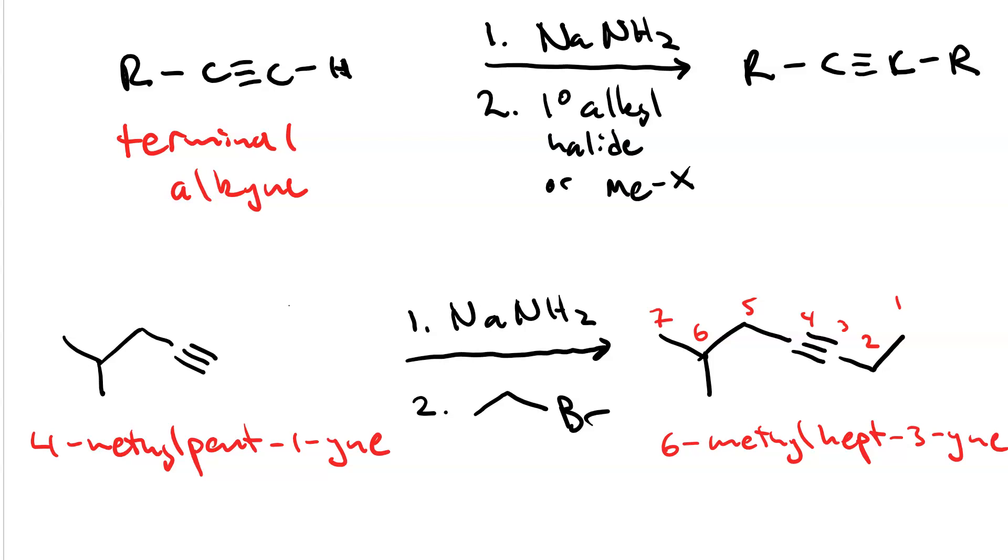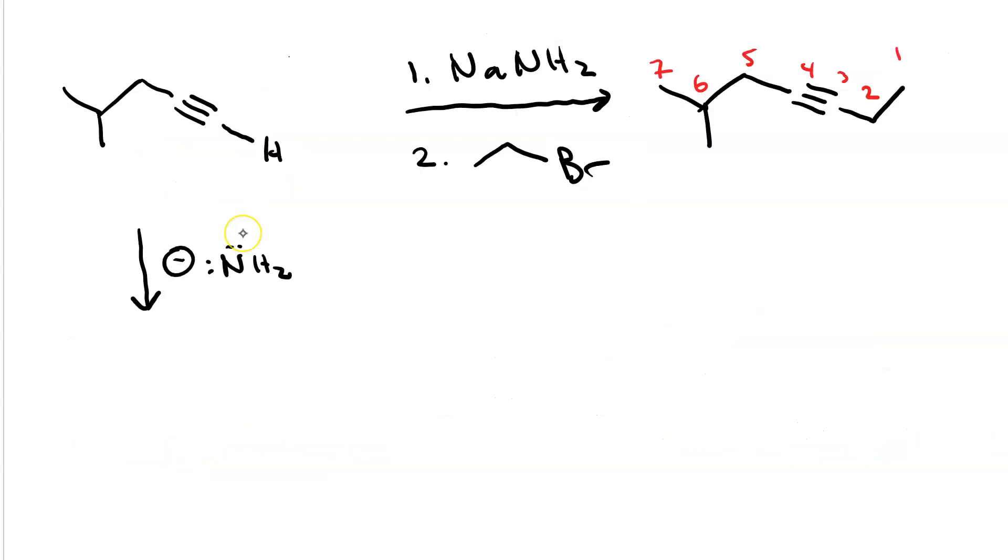If you got something different it might be useful to go through the mechanism. In the first step the amide ion deprotonates the terminal alkyne making an alkynide.